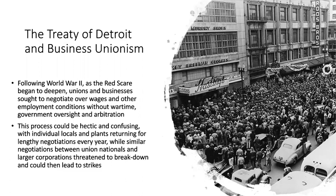Up until Taft-Hartley, what specifically a union could bargain on and what actions they could take was still unsettled. In the Great Depression, sit-down strikes were effectively made legal on a de facto basis. The Flint sit-down strike won workers the right to join the UAW, and the Little Steel strikes ensured the United Steelworkers had their union.